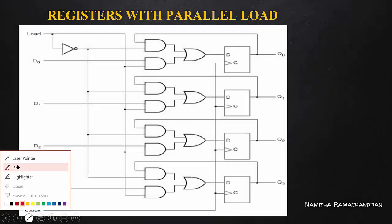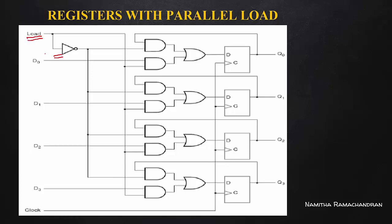Externally, we also want to consider an extra input as load input. Load input is in complement form. When the load input is active, we will load this input into a register. If we don't want to load the input externally, we need to work with Q0, Q1, Q2, Q3. When the external input is high, we need to load the value from the external input. Load input is zero — load bar is here. We need to do this for parallel loading.